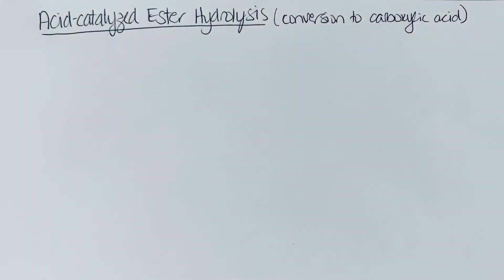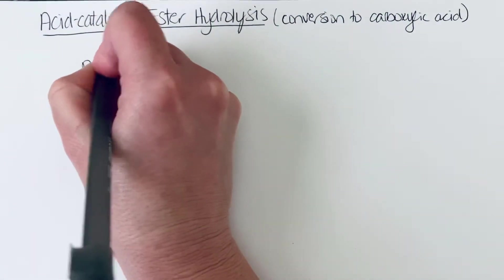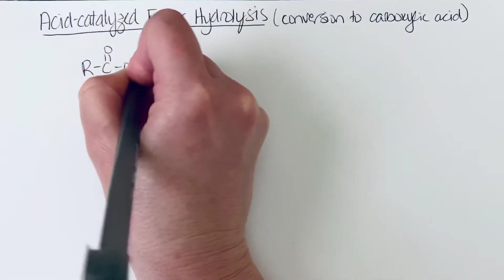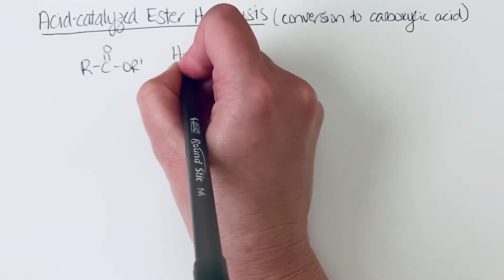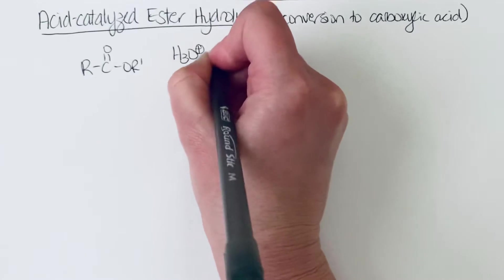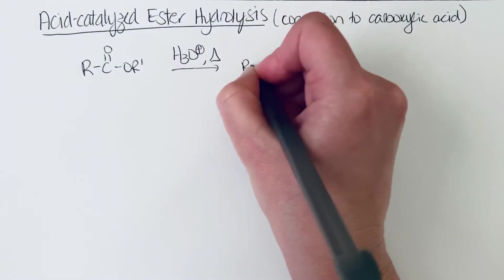So what this is, is essentially the opposite of the Fischer esterification. So if we have an ester, let's just draw a generic ester, and we treat this with aqueous acid, and we heat it up, we can convert this to a carboxylic acid.